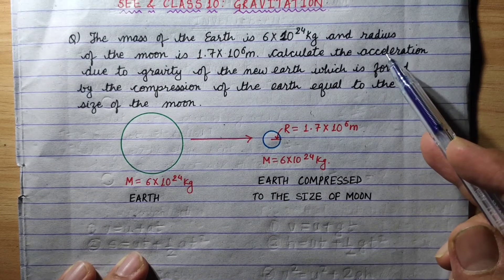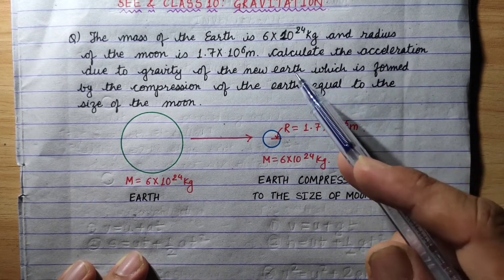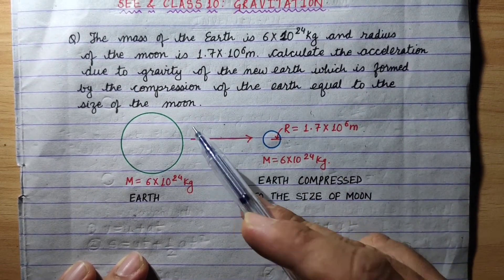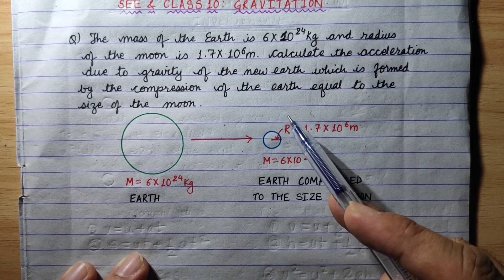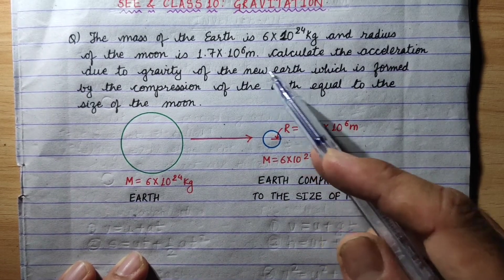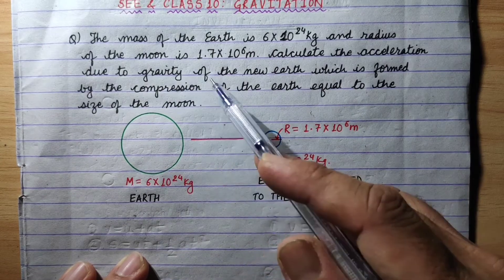If the Earth is compressed to the size of the Moon, then we need to find the new Earth's acceleration due to gravity.